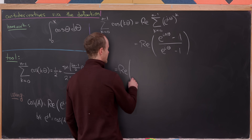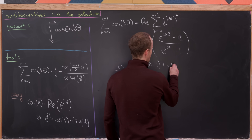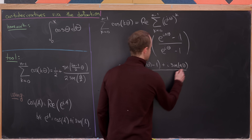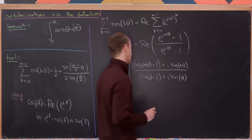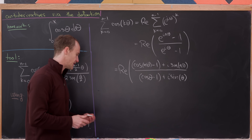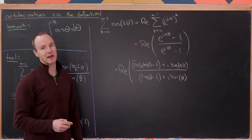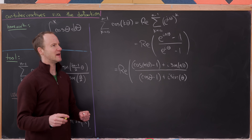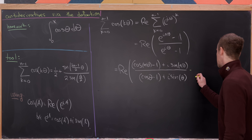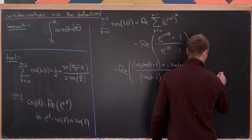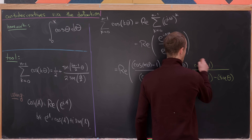Now let's re-expand this in terms of sines and cosines and put the real and imaginary parts together. That leaves us with the real part of (cos(nθ) − 1 + i·sin(nθ)) all over (cos(θ) − 1 + i·sin(θ)). To extract the real part, we need to multiply the denominator by its complex conjugate, which is cos(θ) − 1 − i·sin(θ).